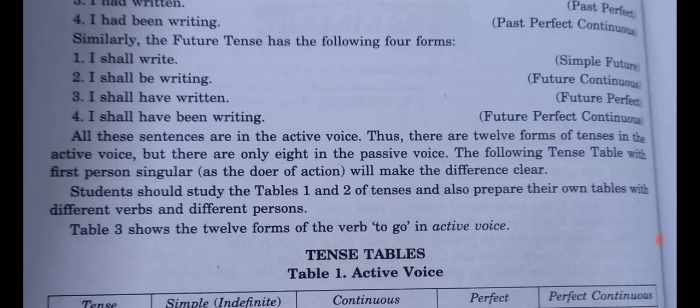All these sentences are in the active voice — I have already explained active and passive voice. The verb here denotes the action and shows whether the sentence is in active or passive voice. Thus there are 12 forms of tenses in the active voice, but there are only eight in the passive voice.